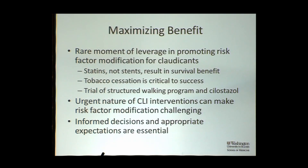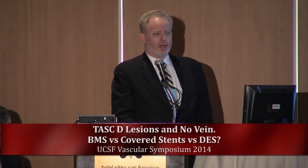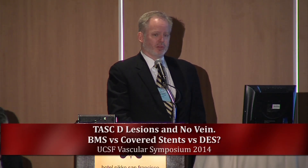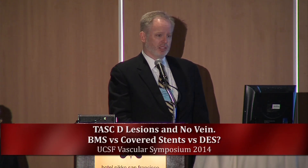The urgent nature of CLI means we usually don't have that luxury of pursuing those options, and so some of those risk factor modifications can't be accomplished. But overall, as both Mike and Peter emphasized, we probably do a really poor job of informing our patients about the expectations for these lesions. If you're blunt with them, particularly if they're having fairly modest symptoms or are otherwise limited by comorbidities, I think most wise claudication patients will consider turning away if you really spell out the data for TAS-D lesions.